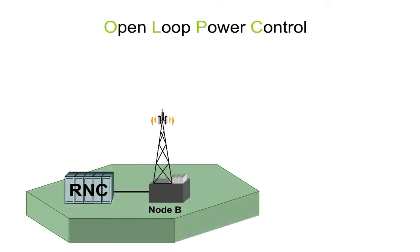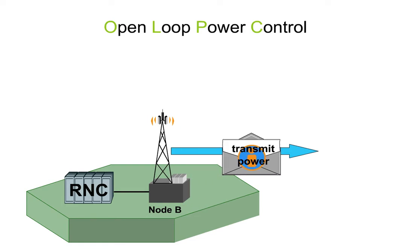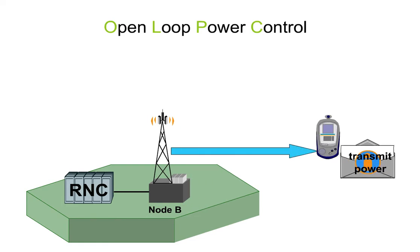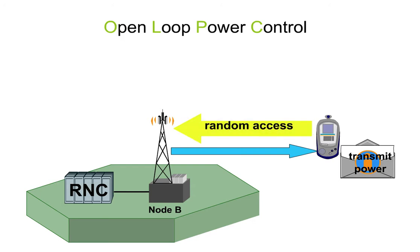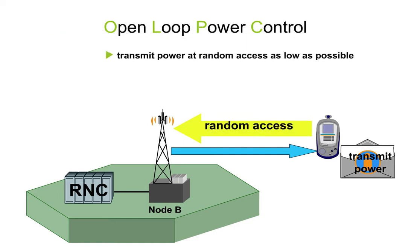The Node B uses certain channels to broadcast information about the transmit power that a user equipment must use when performing its first network access. Since, in CDMA systems, each subscriber represents a source of interference for the other connections — we'll speak about that more in Module 5 — the random access to the network must be performed with the lowest transmit power possible.